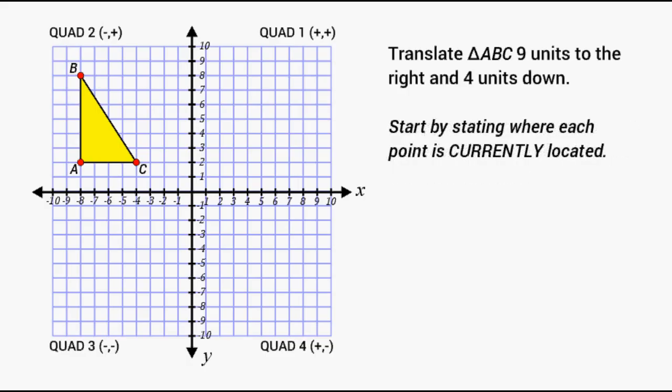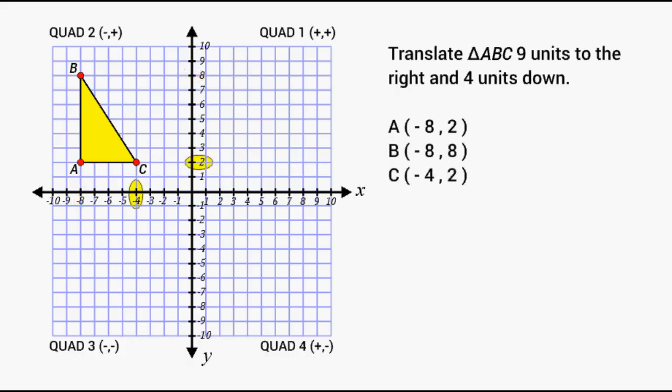So what we're going to do first is see where each point is currently located. Point A is at negative 8, positive 2. Point B is at negative 8, positive 8. And point C is located at negative 4, positive 2.